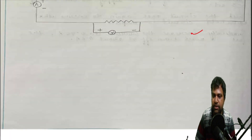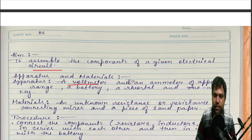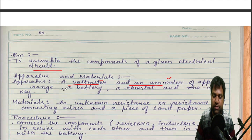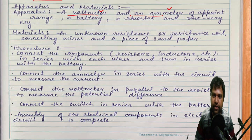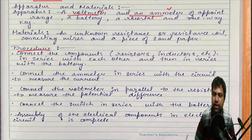The second activity is to assemble the components of a given electrical circuit — voltmeter and ammeter. The voltmeter is connected in parallel and the ammeter in series. You bring the apparatus to your lab, connect them, draw the circuit diagram, and write down the inference — what result you are getting from your activity. Write the procedure directly; no need to write lengthy theory.